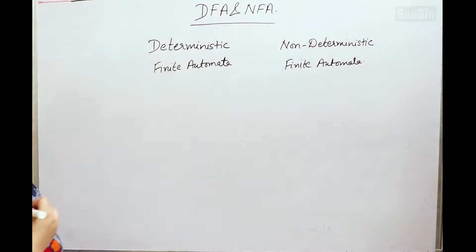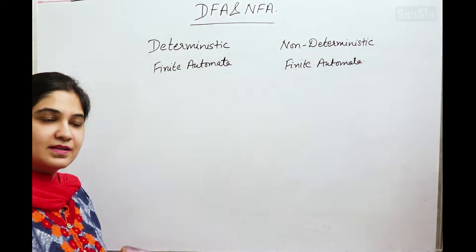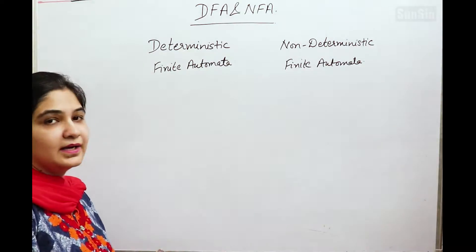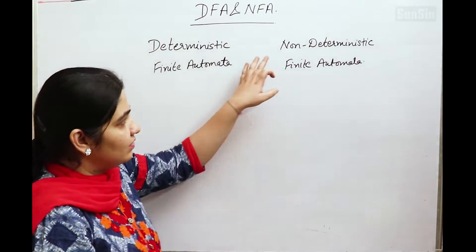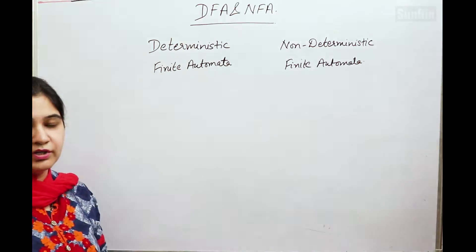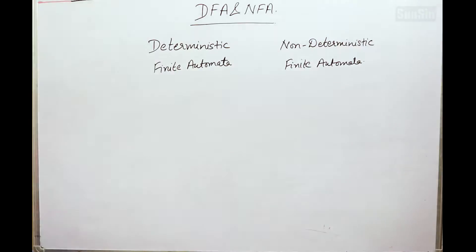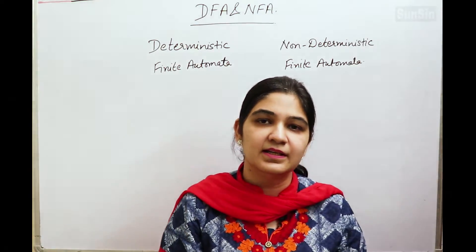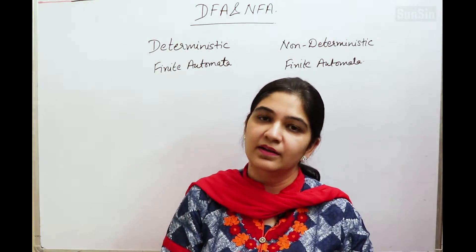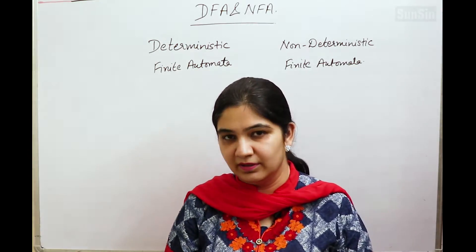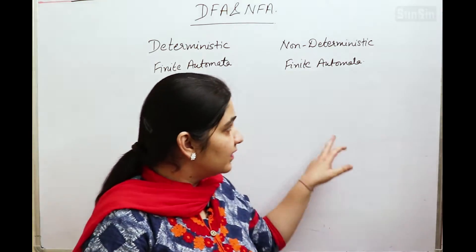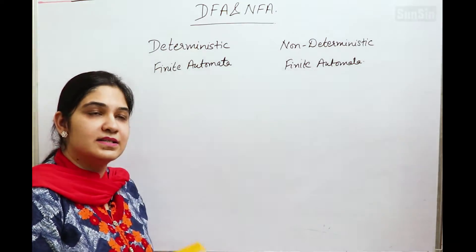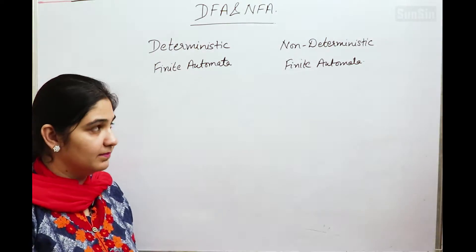As the name suggests, deterministic means things which can be uniquely determined or identified, and non-deterministic means things which cannot be uniquely determined. The definition of Deterministic Finite Automata is: a finite automata in which the next state can be uniquely determined from a given particular state with a particular input alphabet.